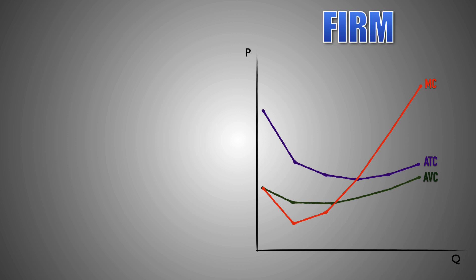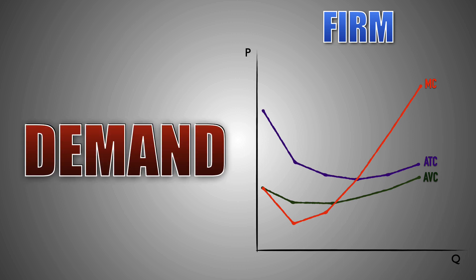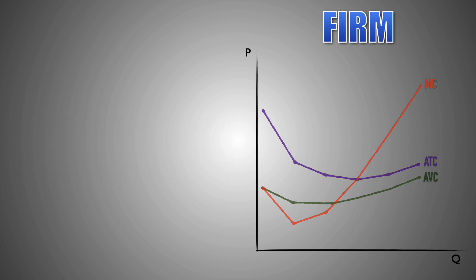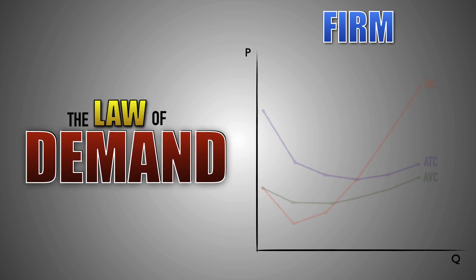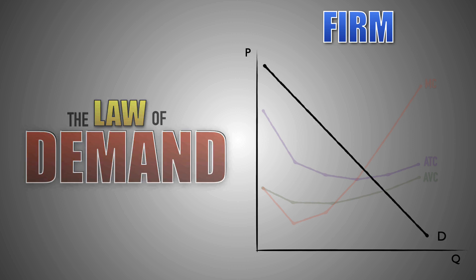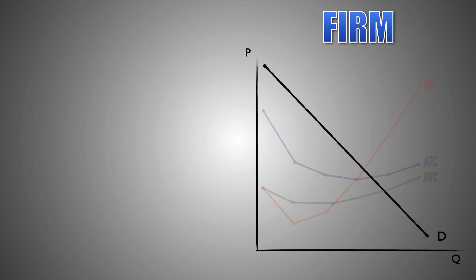Next, let's graph the demand curve for the firm. In imperfectly competitive markets, the law of demand is in effect. This means that the relationship between product price and the quantity of goods demanded by consumers is inverse, leading to a downward-sloping demand curve for imperfectly competitive firms.